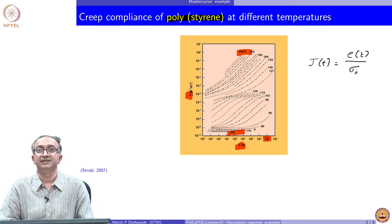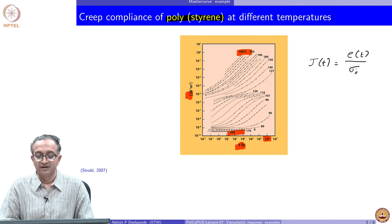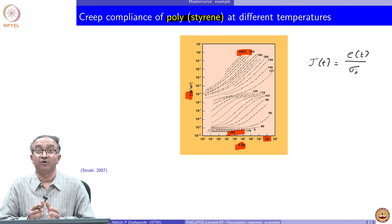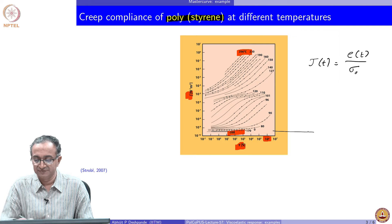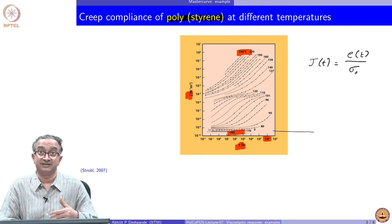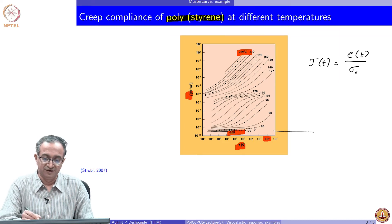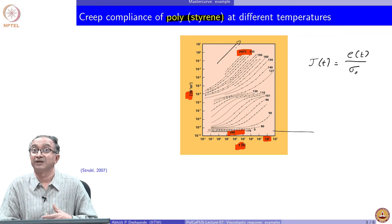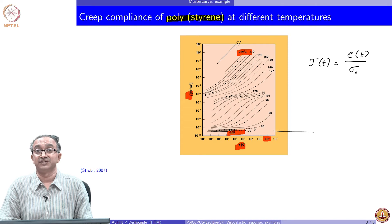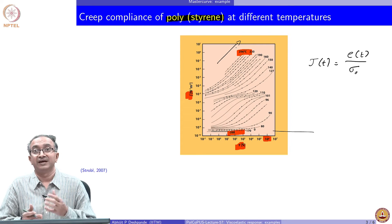Again, something which is easy for us to understand. Now you can see that there is all different types of qualitative response. We have basically constant compliance which implies an elastic, Hookean elastic behavior. We also have pretty much constant increase in compliance which pretty much implies the Newtonian viscous response.